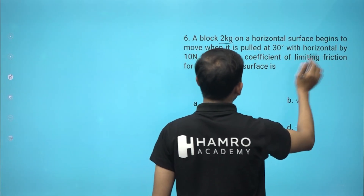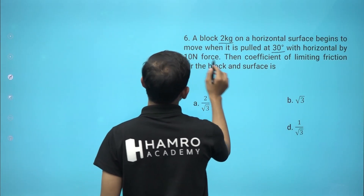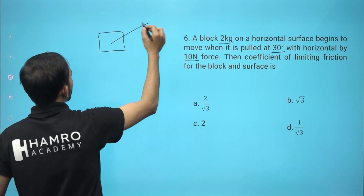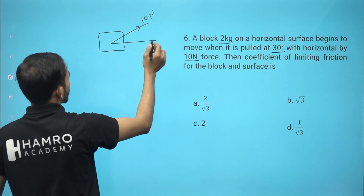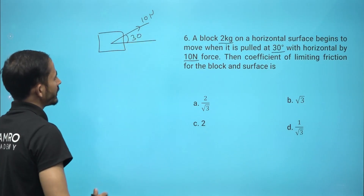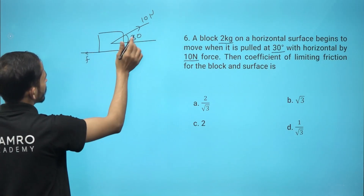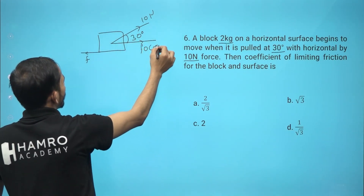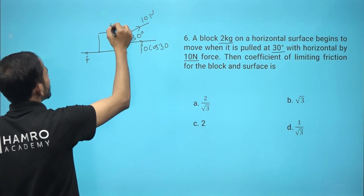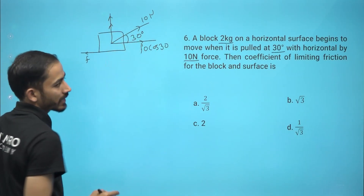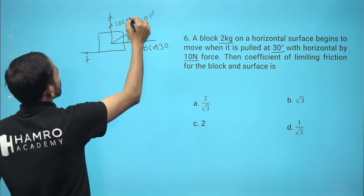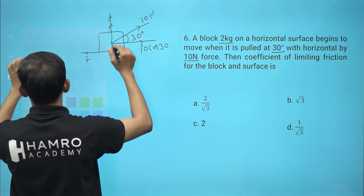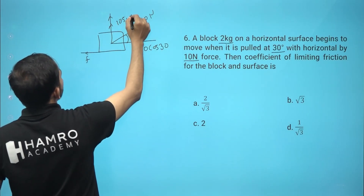Next problem: a 2 kg block is pulled at 30 degrees with 10 newton force. Find the coefficient of limiting friction. The block just moves, so the horizontal force component is 10 cos 30 degrees, and the vertical component upward is 10 sin 30 degrees.